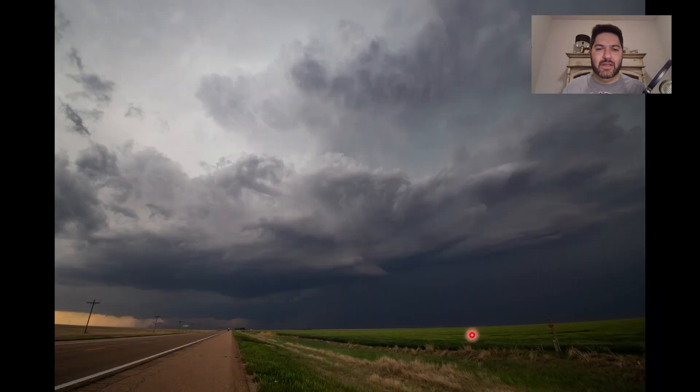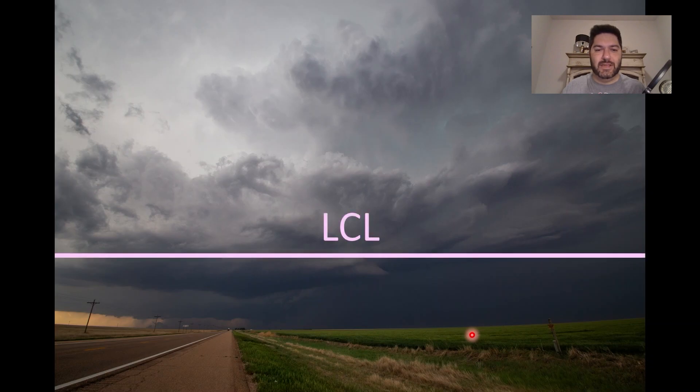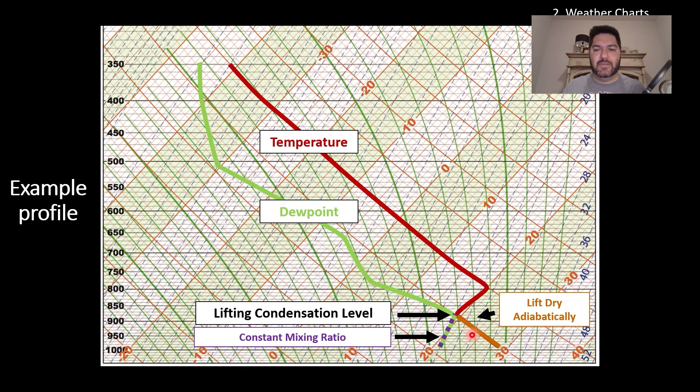The LCL, if you were going to look at that visually, here is a thunderstorm picture I took in 2020, and essentially the LCL would just be cloud base. Where that air first condenses as it's lifted up, that's the lifting condensation level. And it turns out the lower that is, the higher the likelihood of tornadoes. There's a lot that goes into it, but there's been some research on that topic.